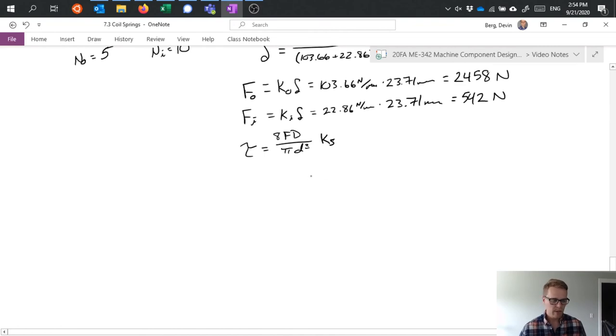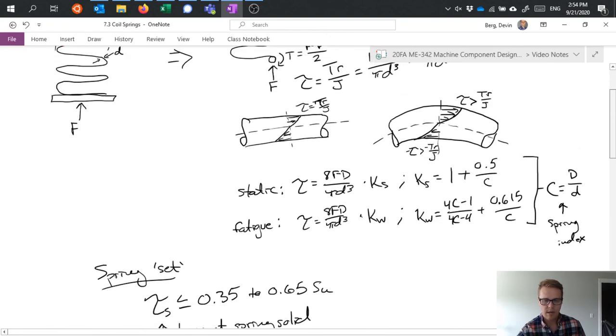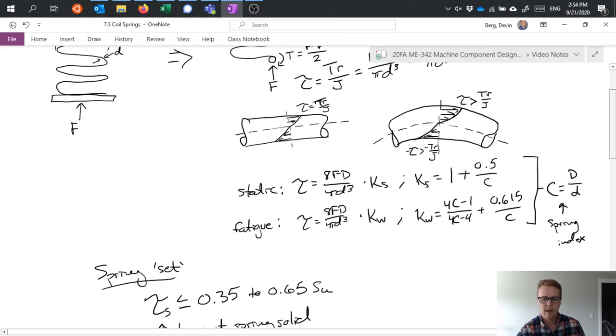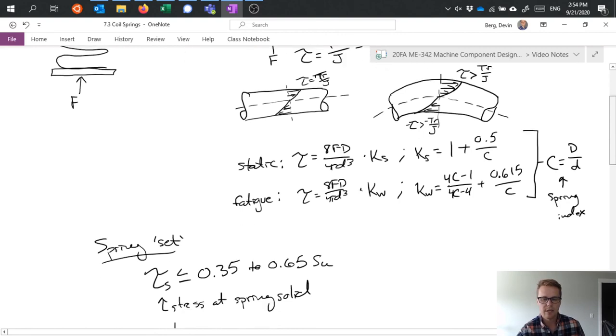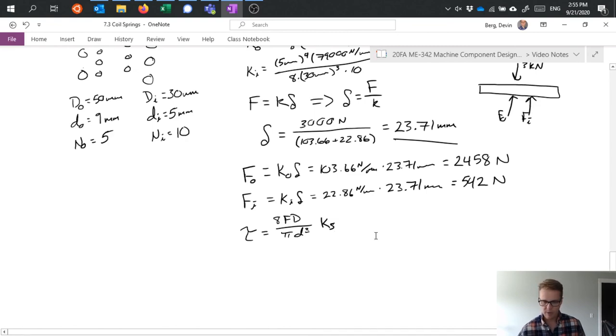Now, first we need to grab the equation for K_S. If I go up here, I can see K_S equals 1 plus 0.5 over C and C equals big D over little d. So for the inner and the outer, where did my pen go? There we are. C_outer equals 50 over 9, which equals 5.56. C_inner equals 30 over 5, which equals 6. So that's our spring index.